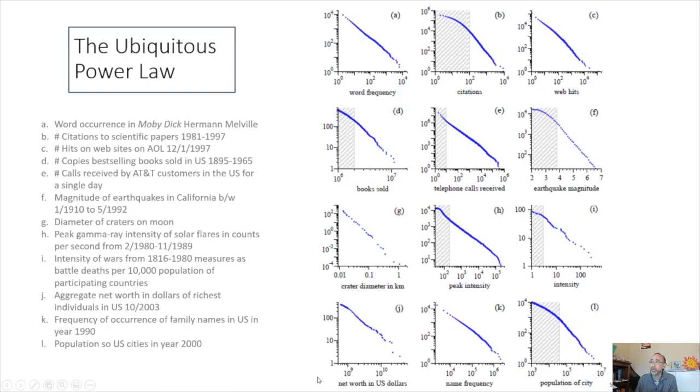And this power law is seen in many different situations, all across nature, as well as complex social networks, and also even in books. The word occurrences in Moby-Dick also follows a linear relationship, number of citations to a scientific paper, number of calls, magnitude of earthquakes, the diameters of craters on the moon, etc. So this power law is a ubiquitous law that's seen in complex systems.